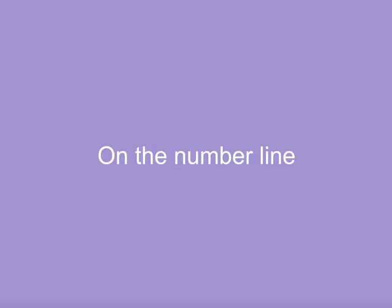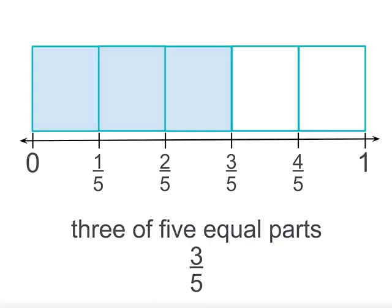We can also think about fractions as points between whole numbers on the number line. So with 3 fifths, we divide the number line between 0 and 1 into 5 equal parts. 3 fifths is the third point along the line.